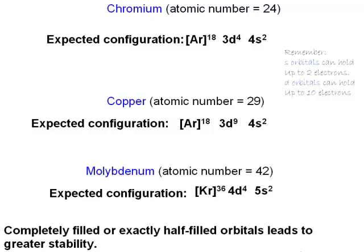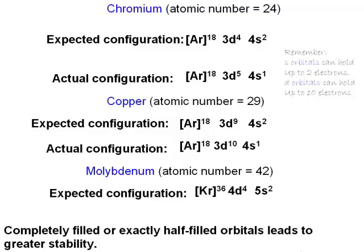So in the case of chromium, the electrons can arrange themselves so that both the 3d and the 4s orbitals are exactly half-filled. In the case of copper, the electrons can arrange themselves to result in a completely filled 3d orbital and an exactly half-filled 4s orbital.